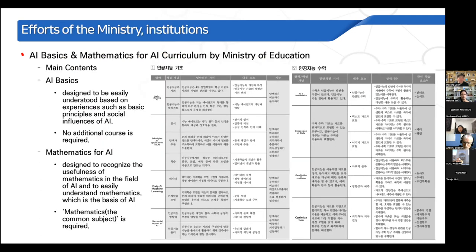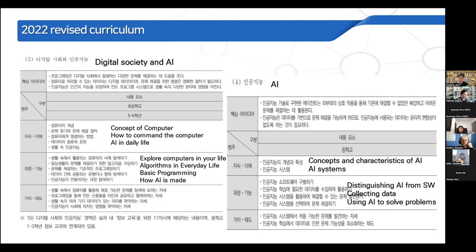After this plan, the AI Basics and Mathematics for AI curriculum was developed by the Ministry of Education in 2021. In 2022, a very important curriculum was released — the mainly official curriculum for every K-12 student in Korea. In the 2022 revised curriculum, the Ministry of Education includes AI for all students in primary school, lower secondary school, and upper secondary school.